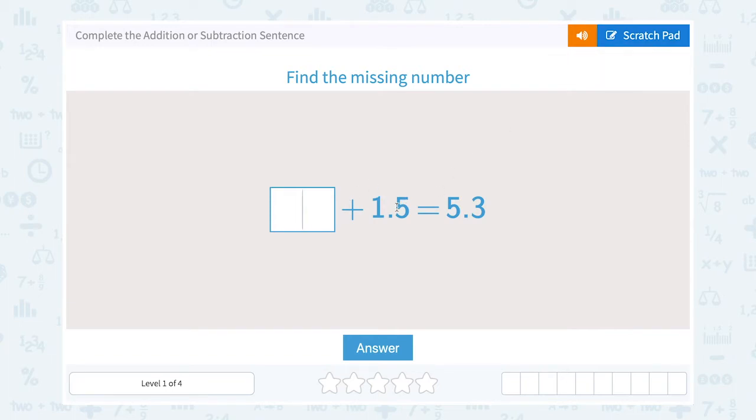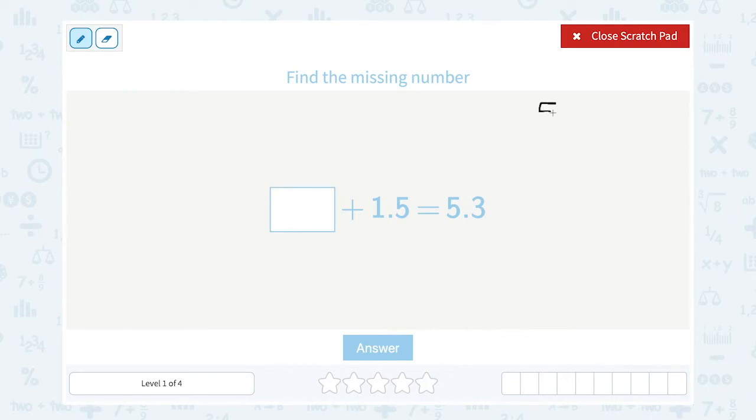If we add 1.5 to it to get to 5.3, we can say, what was it before I added the 1.5? So to undo that, the opposite of adding 1.5 is subtracting 1.5. So let's subtract 1.5 from 5.3 to see what the number was before we added the 1.5.